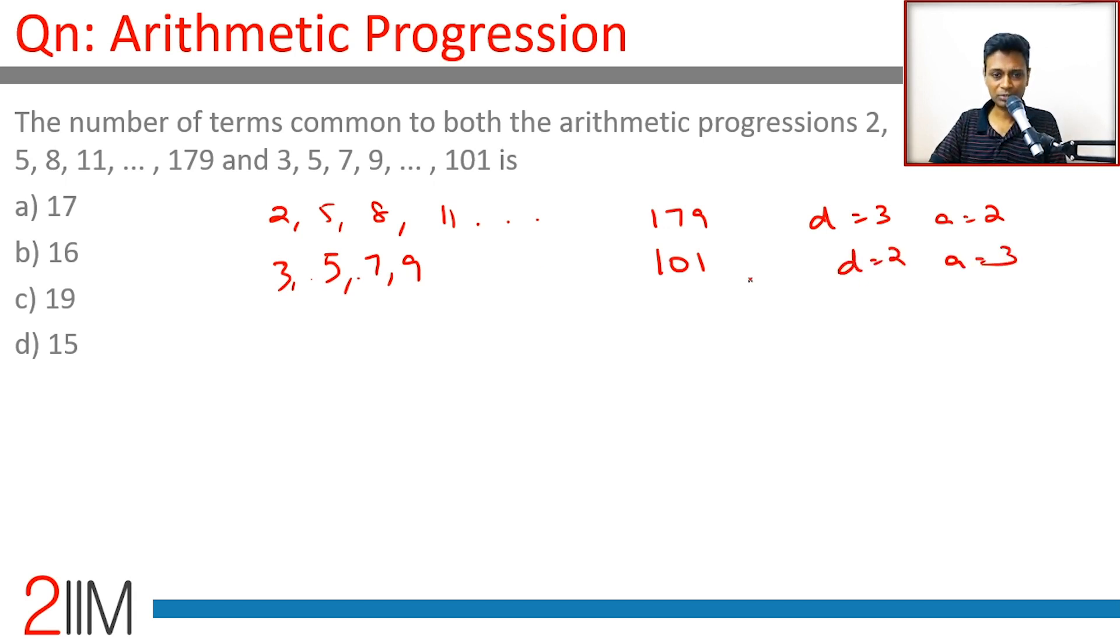The first common point is 5. We have that this goes in steps of 3, this goes in steps of 2, so the LCM of 2 and 3 is 6. The sequence goes as 5, 11, 17, 23, etc., in steps of 6.